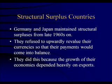The structural surplus countries, Germany and Japan, were basically stubborn about upwardly revaluing their currencies under the original Bretton Woods system. They did this because they saw benefit from continuing to export at high rates, since their growth had become dependent on their export performance.